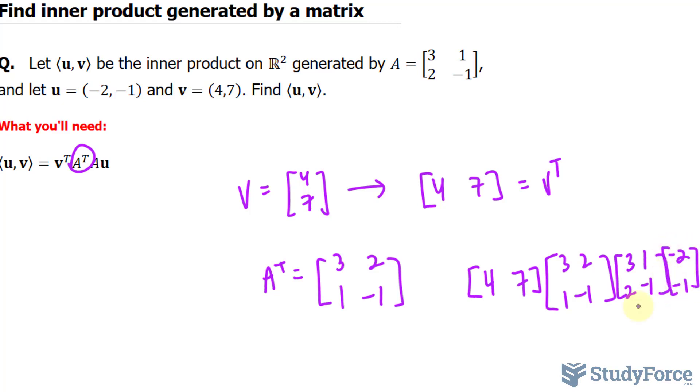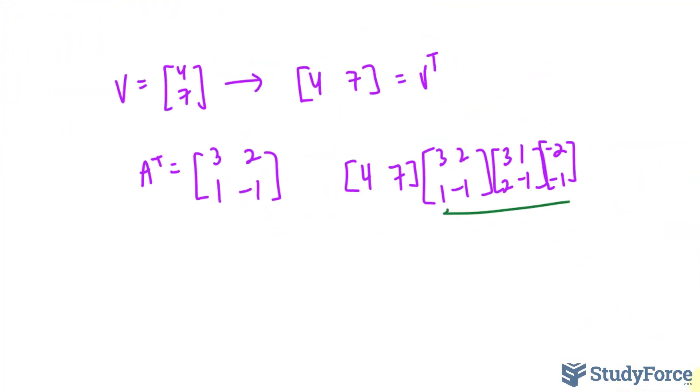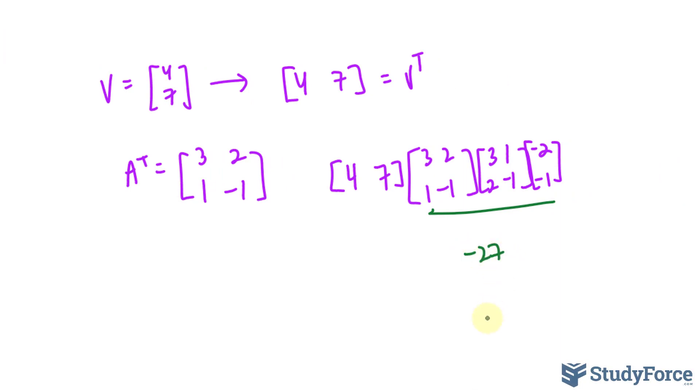I'm going to assume at this point you know how to multiply matrices together. So I'm going to multiply these three together and you should end up with negative 27 and negative 4, multiplied by 4 and 7.